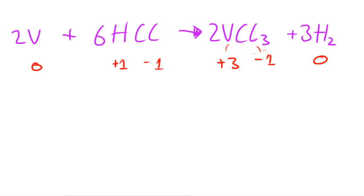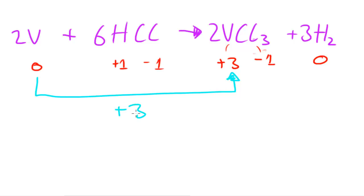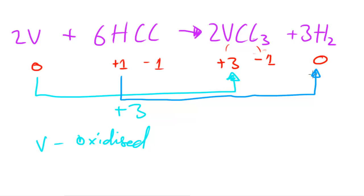Now we can analyse this and find out what's been oxidized and what's been reduced. Vanadium has increased in oxidation number by three — from zero to plus three — so vanadium has been oxidized, because its oxidation number has increased. Hydrogen has gone from plus one to zero, so its oxidation number has decreased, and therefore hydrogen has been reduced.